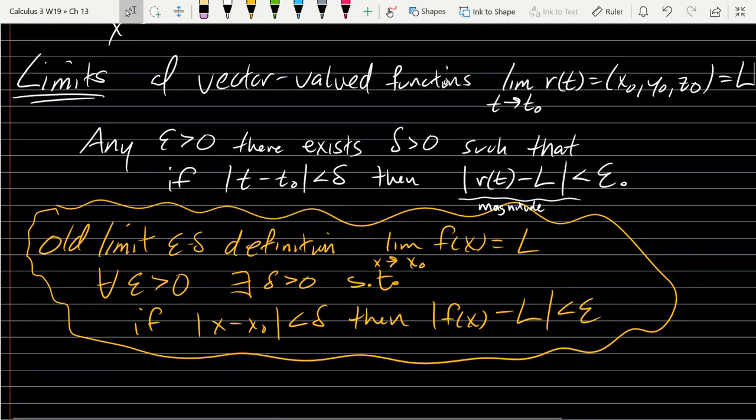And we're comparing the magnitude to a number, which makes sense. With the magnitude, the distance to be small. So that's the definition of a limit. You can do this one at a time. We'll look at that tomorrow. You can break it down to just three one-dimensional regular limits.